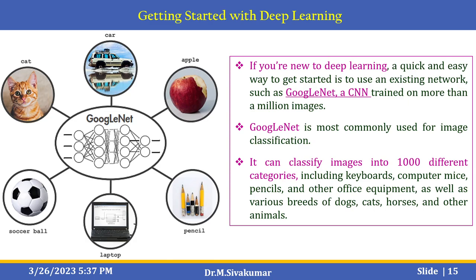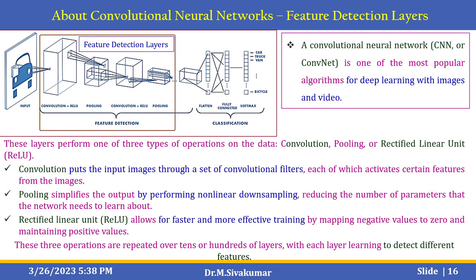GoogLeNet is a commonly used network for image classification. For those new to deep learning, a quick way to get started is to use an existing pre-trained network such as GoogLeNet — a convolutional neural network trained on more than a million images. GoogLeNet can classify images into a thousand different categories, including keyboards, computer mice, pencils, and various breeds of dogs, cats, horses, and other animals.